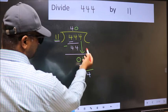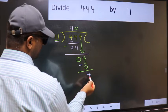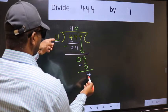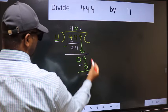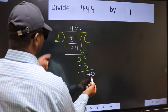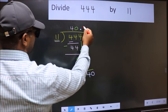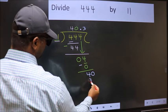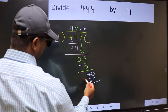So now you can put dot and take 0, so 40. A number close to 40 in 11 table is 11 threes 33. Now you should subtract, you get 7 and continue the division.